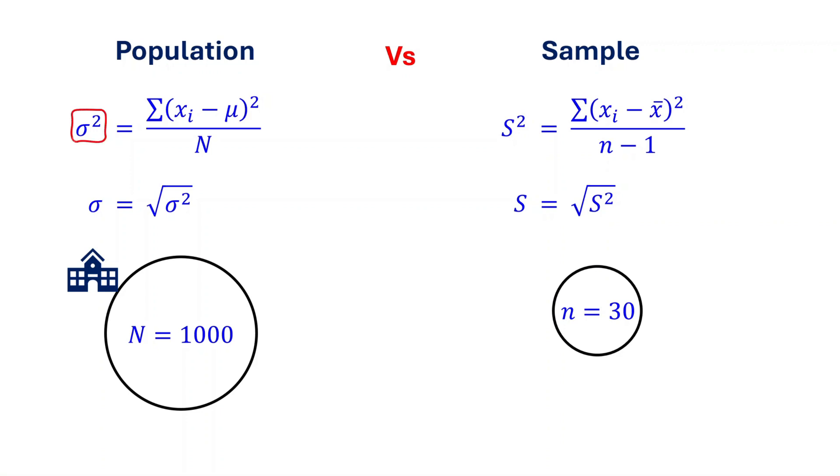In these formulas, sigma squared represents the population variance, and s squared represents the sample variance. Xi represents each data point, whether we are working with a population or a sample. For a population, it refers to all data points in the entire group. For a sample, it refers to only the data points in a smaller group taken from the population. Mu represents the population mean, and x bar represents the sample mean.